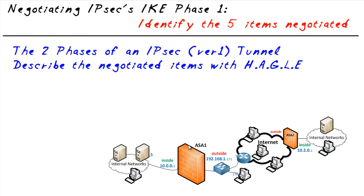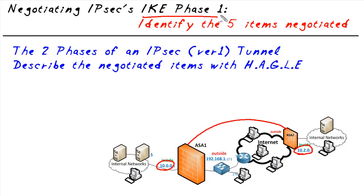IPsec is a great way to implement a site-to-site tunnel. For example, we might have ASA1 and ASA2 and they want to secure all the traffic between the 10.0.0 network and the 10.2.0 network over the internet. Using IPsec we can certainly do that. Part of negotiating and building that tunnel involves something called an IKE Phase 1 tunnel, and the details are that you have to have five specific elements agreed to between the two peers.